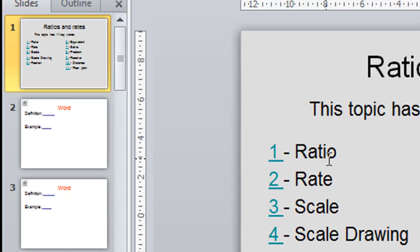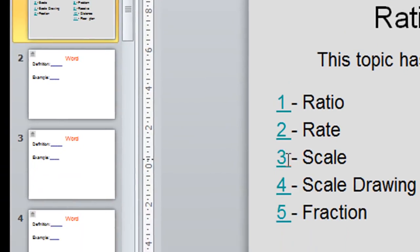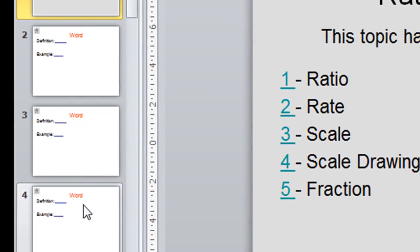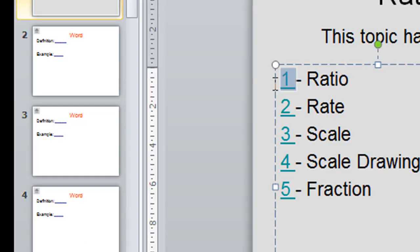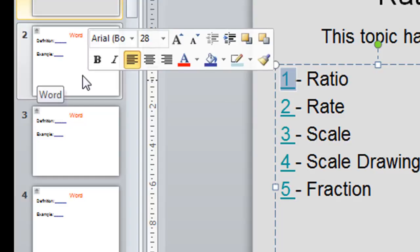So, word one is on slide number two. Word two will therefore be on slide number three. And word three will be on slide number four and so on. So, for each of these numbers, it links to that number plus one in your slideshow.